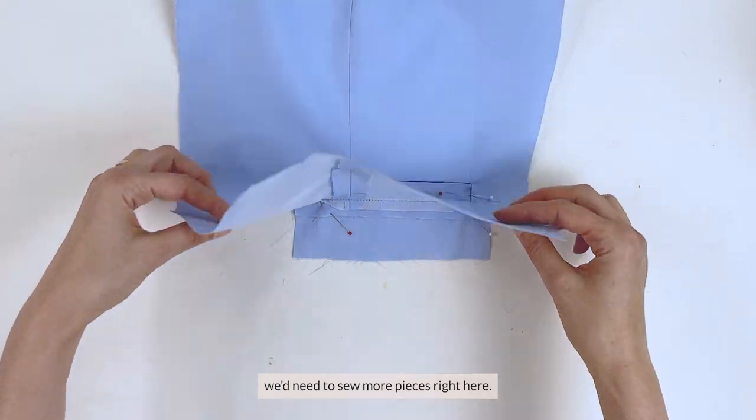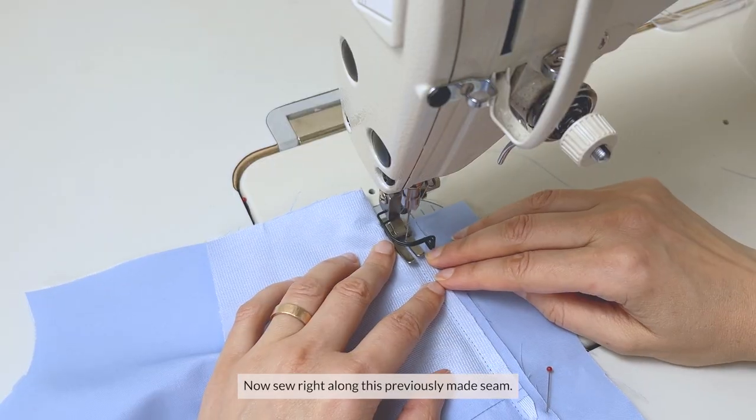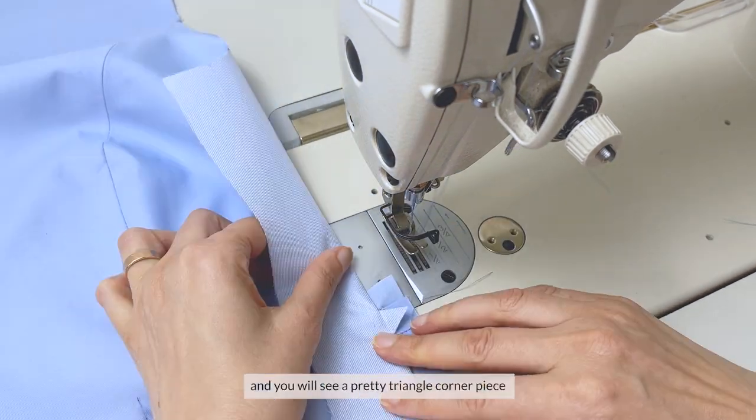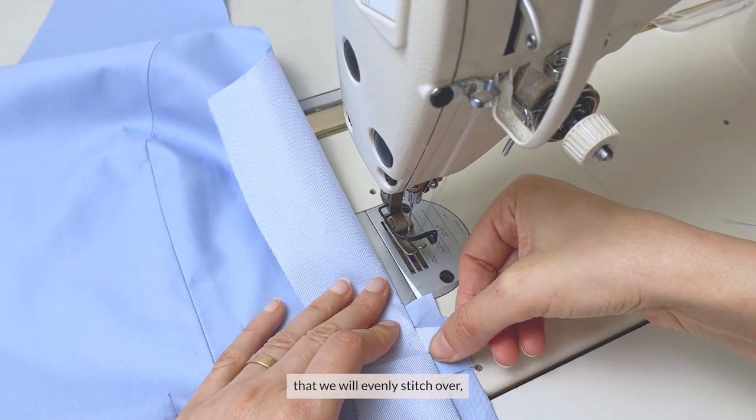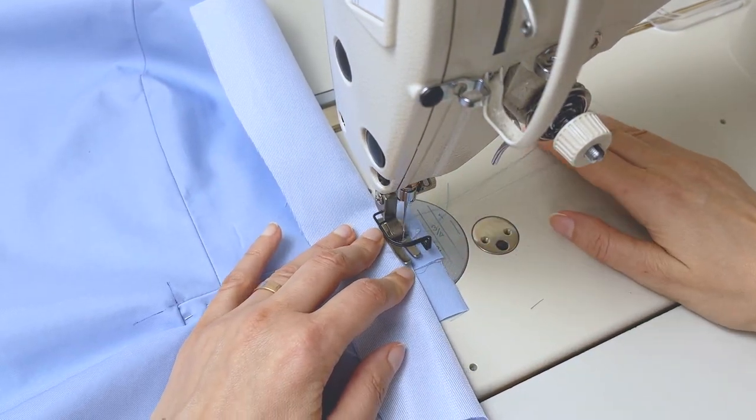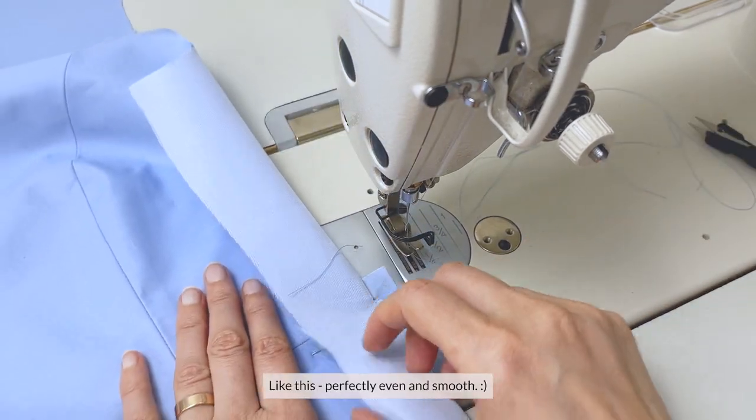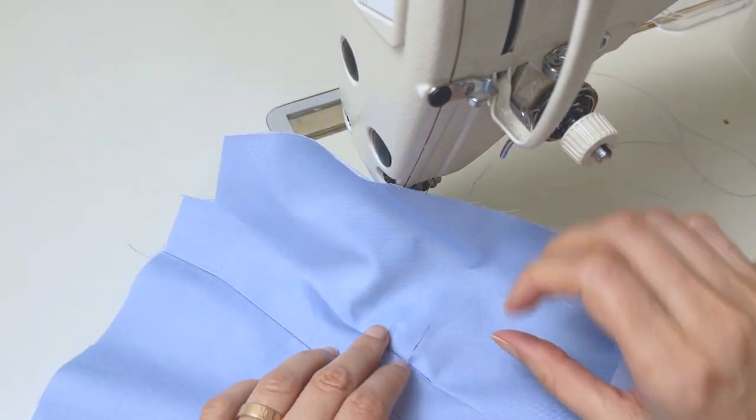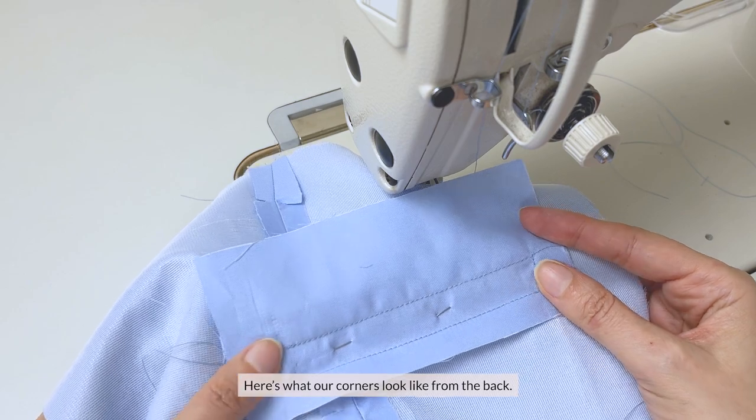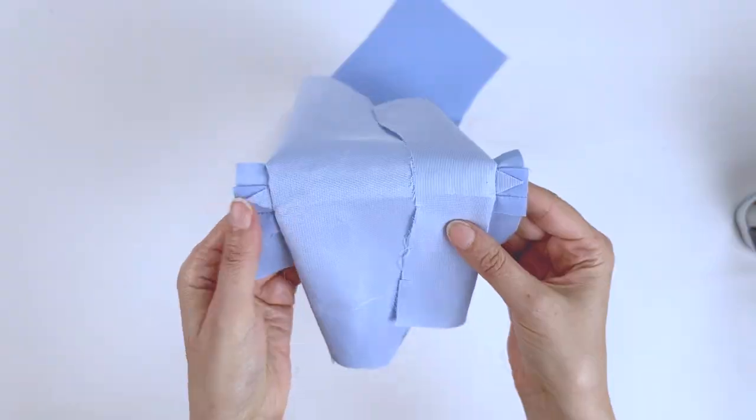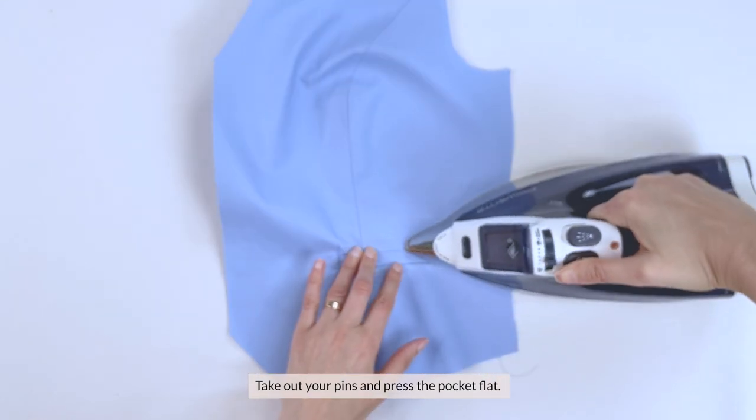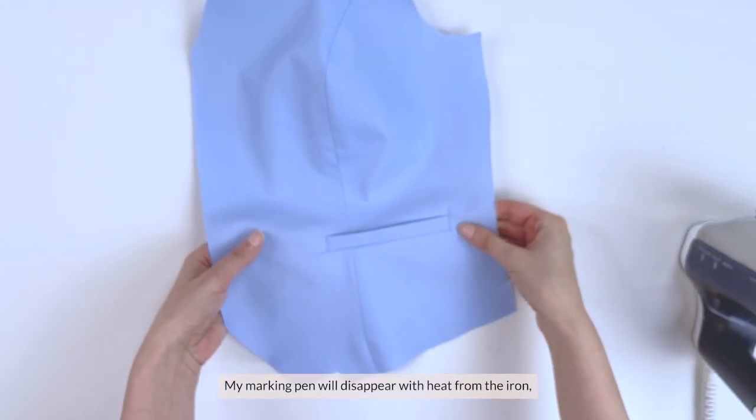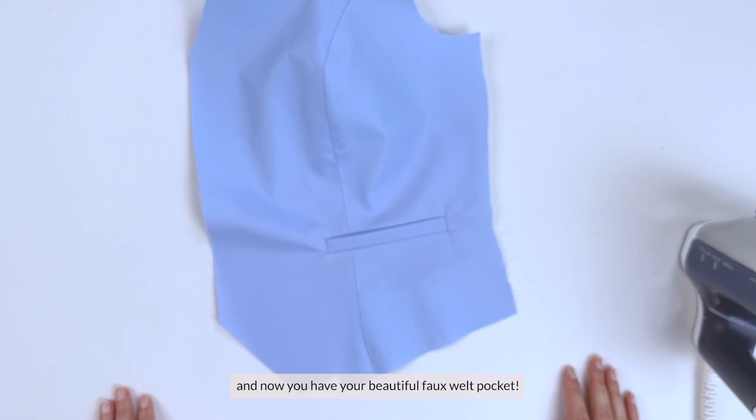If we were going to sew a working pocket, we'd need to sew more pieces right here. Now sew right along this previously made seam. Next turn it over and you're going to see a pretty triangle corner piece that we will evenly stitch over through all the layers. Like this, perfectly even and smooth. Now do the same to the other end. Here's what our corners look like from the back. Take out your pins and press the pocket flat. My marking pen will disappear with heat from the iron and now you have your beautiful faux welt pocket.